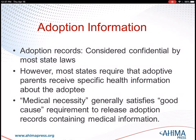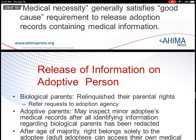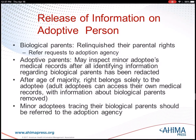Number four: an adoptee's birth record is restricted to protect the biological parents unless both parties have agreed to have their identities disclosed in a mutual consent registry. I believe that is true. And then number five: only the adult adoptee can decide if he or she may access health information of his or her biological parents for health risk purposes.